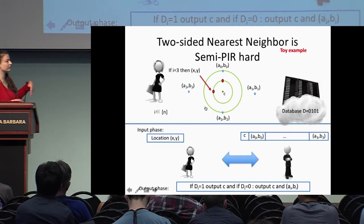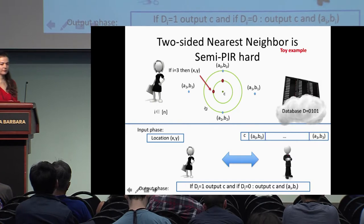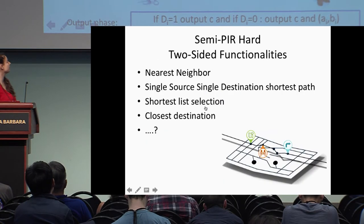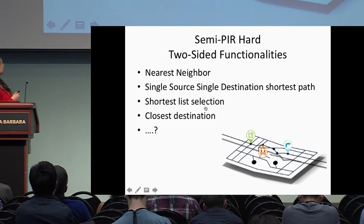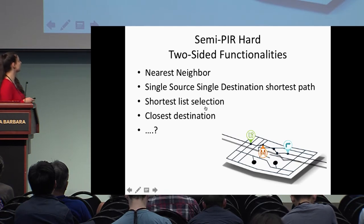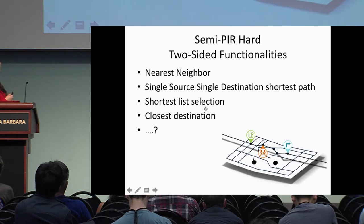That's why it implies semi-PIR. The nearest-neighbor problem is a semi-PIR-hard problem. In the paper, we show other natural hard problems are also semi-PIR-hard: single-source single-destination shortest path, shortest selection, and closest destination — problems where we pick the minimum or maximum element from a list.